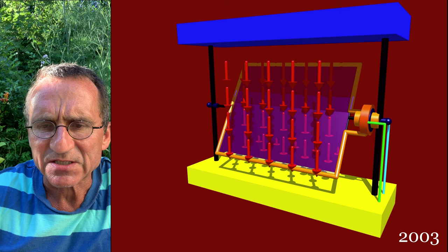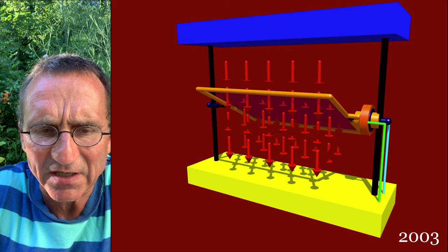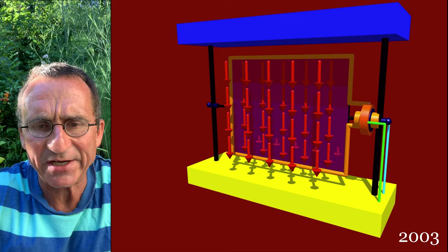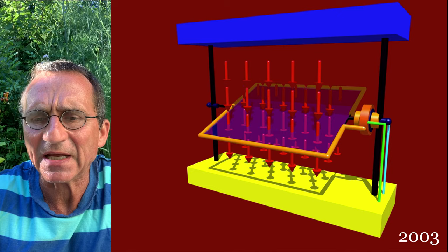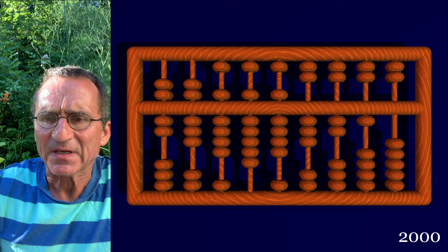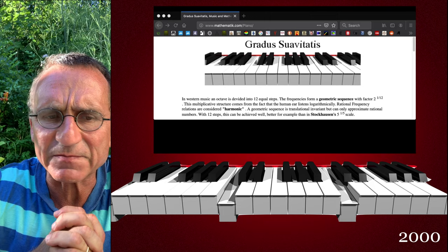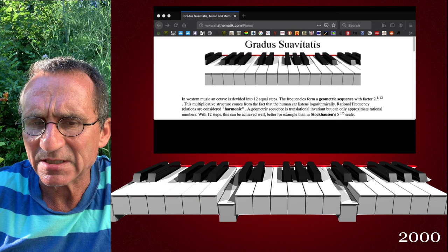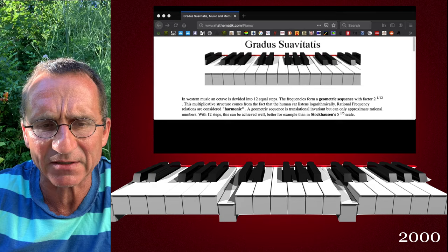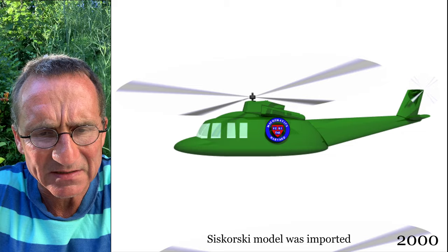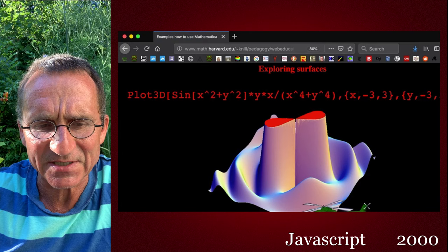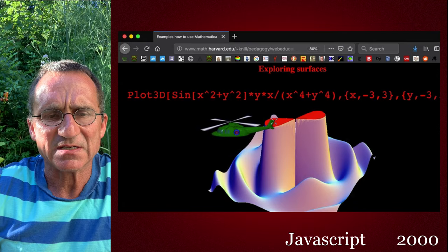Here is another illustration done for a course website, illustrating Stokes' theorem and a dynamo. Maxwell's equations tell us that if you move a wire around in a magnetic field you get an electric field and power. This was also for the website mathematique.com, which was a JavaScript animated website, and all these parts were actually written by POV-Ray. This was for a talk at the Harvard math department in 2000 — just a little gag where the helicopter flies onto a surface.